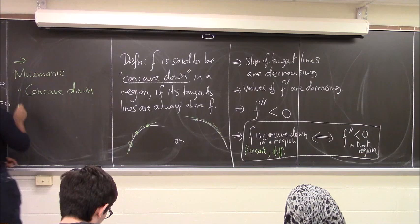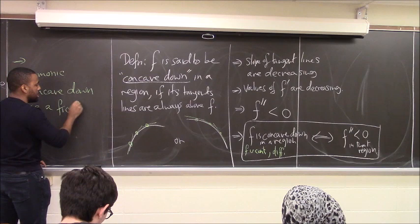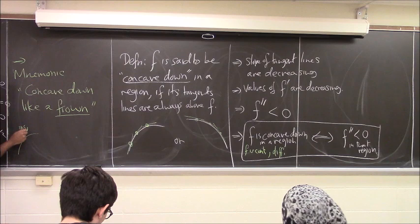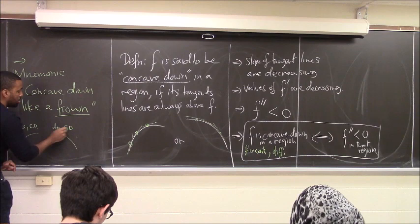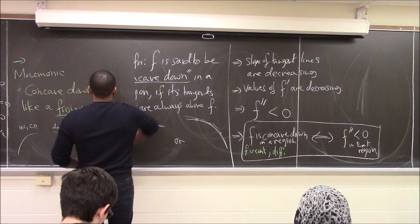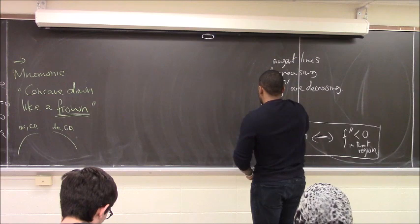So it doesn't necessarily mean the function is moving down — it's talking about the shape of the function, a frown shape, it's bending this way. You can be concave down whether you're increasing or decreasing. This is increasing and concave down, whereas this is decreasing and concave down. It's not about the function itself moving down; it's about the shape of the function. If your function is shaped like a frown in a certain region, you say it's concave down in that region, and it also means that its second derivative is negative in that region.